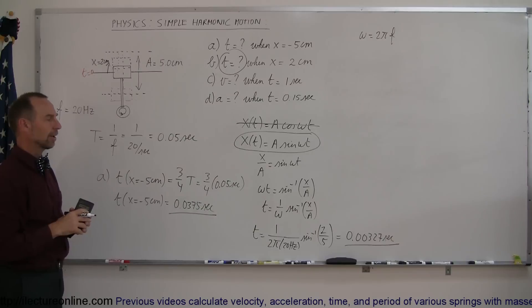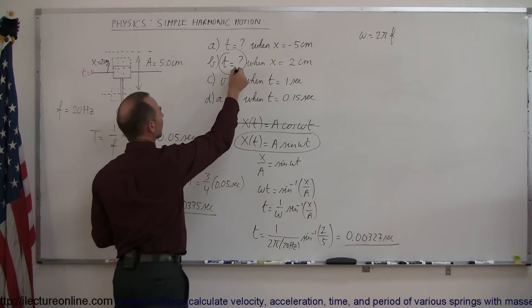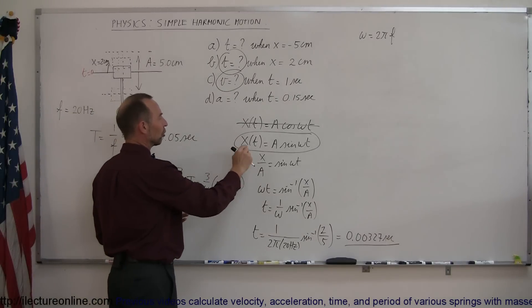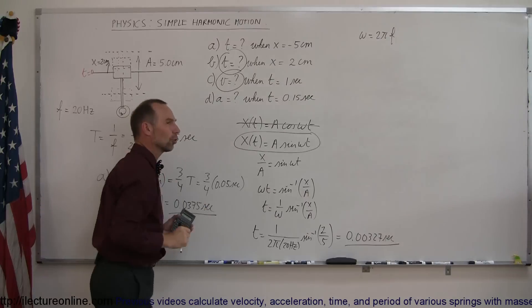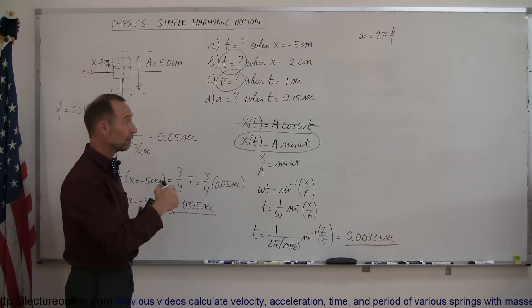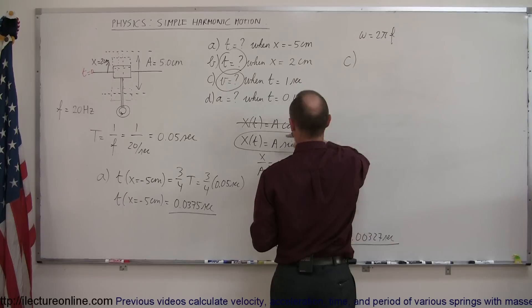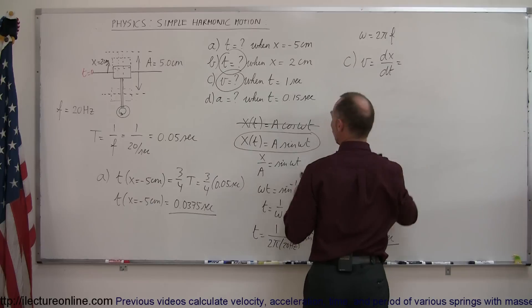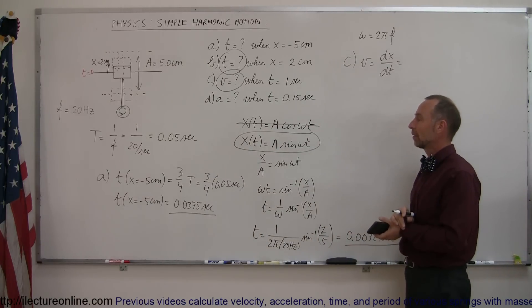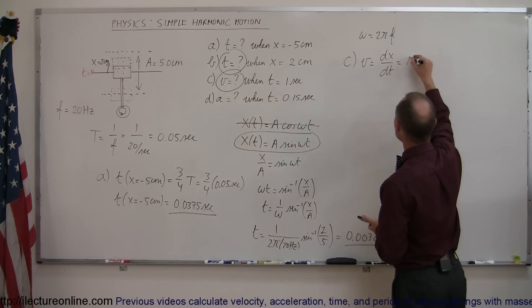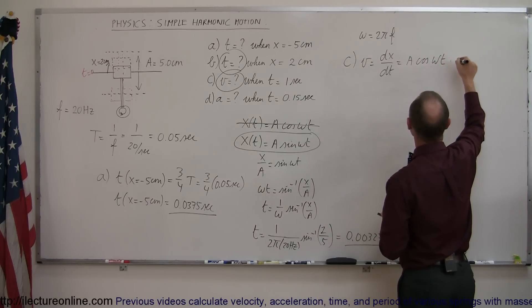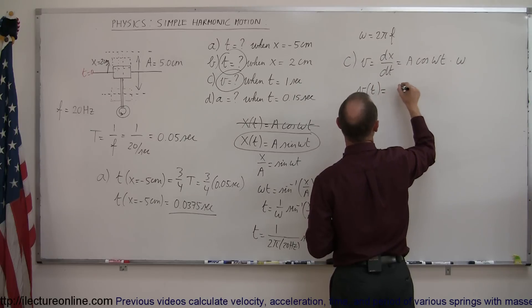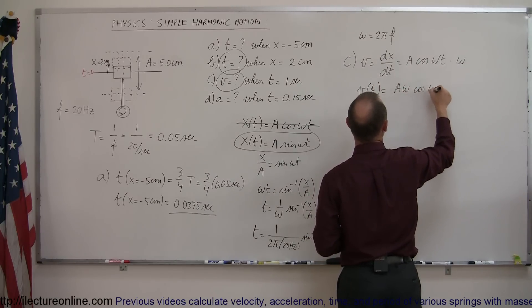Next, they're asking for the velocity when time equals 1 second. We start with the position equation but need one that gives velocity as a function of time, so we take the derivative. Velocity equals dx/dt, which is the derivative of A sine of omega-t. The derivative of sine is cosine, and the derivative of the angle gives an extra omega factor, so velocity as a function of time equals A times omega times cosine of omega-t.